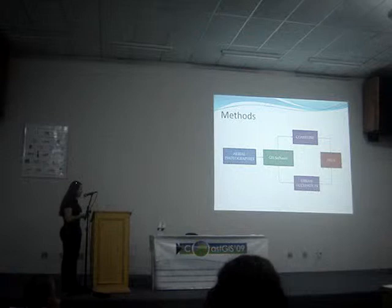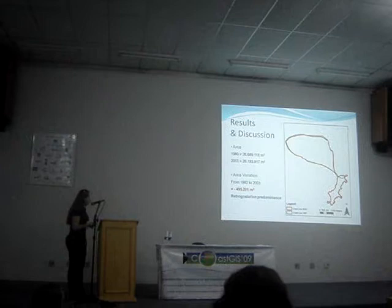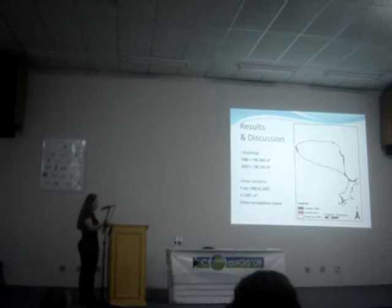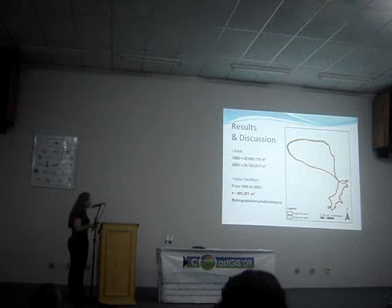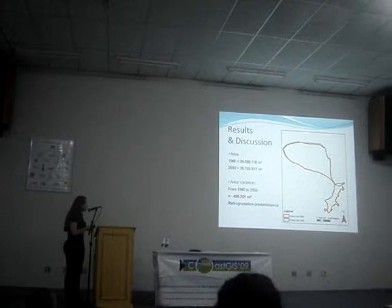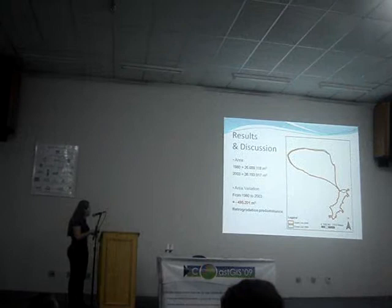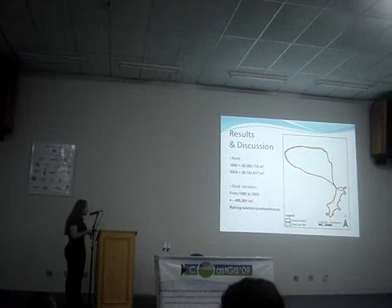Regarding the results and discussion about the coastline area: the orange shows the area for 2003 and the green one for 1980. We can see there was variation and a retrogradation predominance in these areas. There was also a growth of area in one section, while in the Isthmus there was a loss of area.